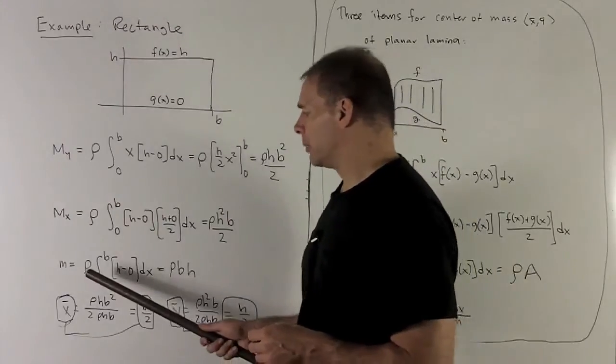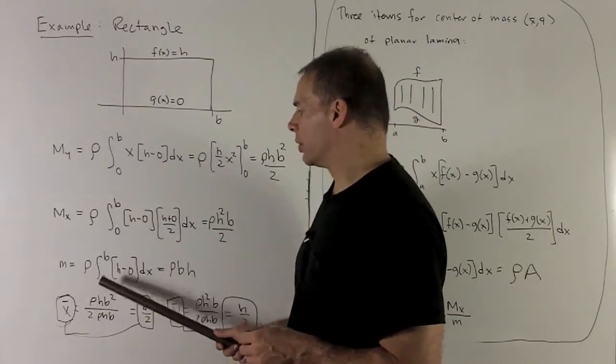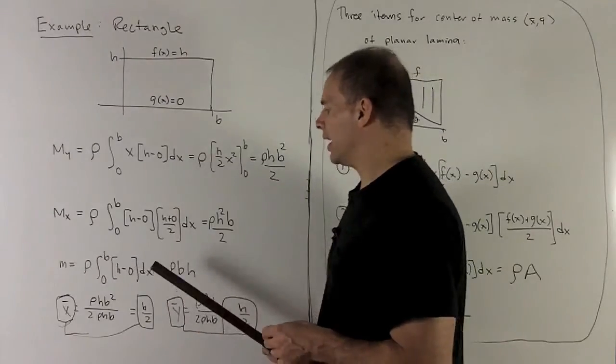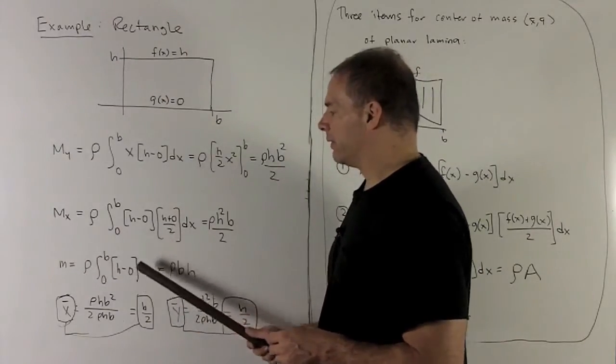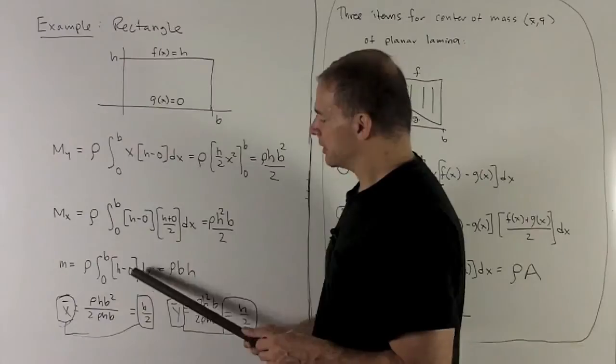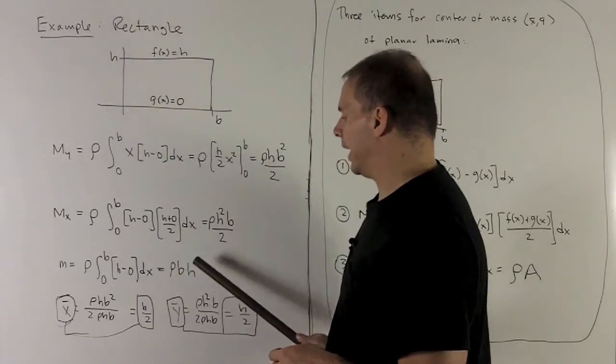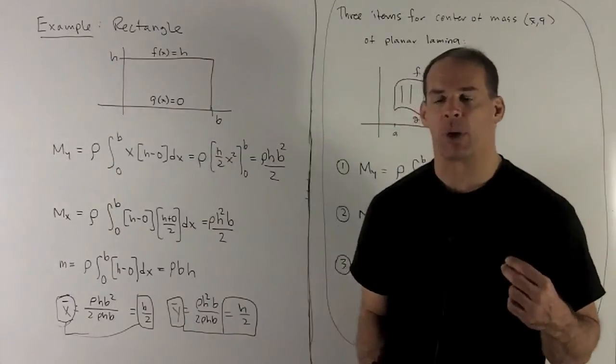For my mass, I'm going to have rho, definite integral from 0 to b, top minus bottom. The h is just going to pull out. And again, we're just taking the antiderivative of 1 times dx. So that turns into x, which leaves me with rho b h.